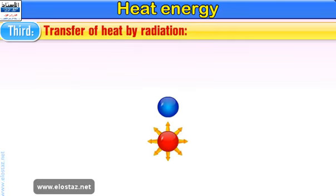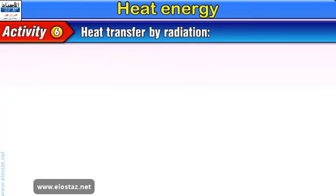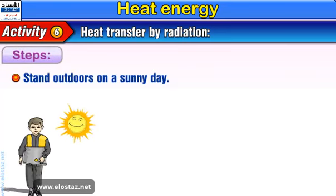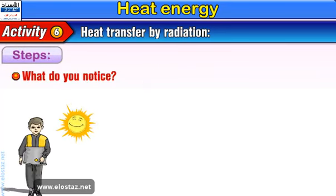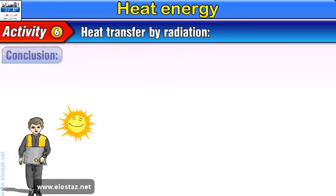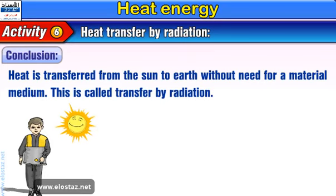3. Transfer of heat by radiation. Activity 6: Heat transfer by radiation. Steps: Stand outdoors on a sunny day. What do you notice? You feel hot. Conclusion: Heat is transferred from the sun to earth without need for a material medium. This is called transfer by radiation.